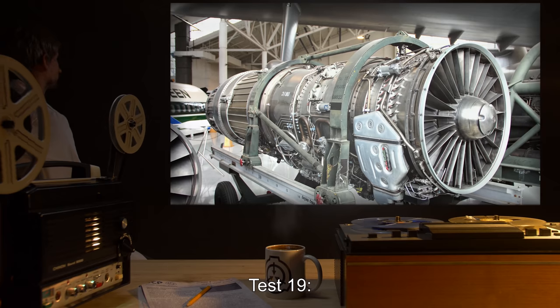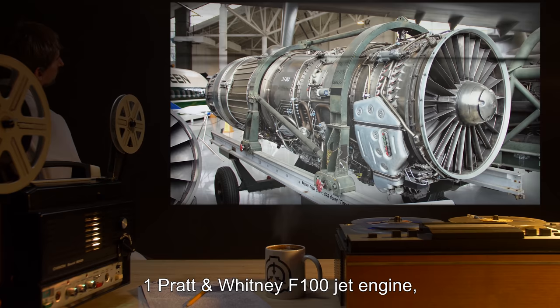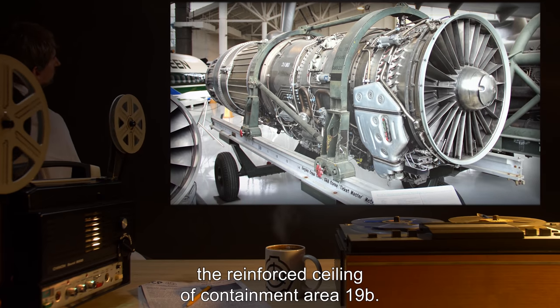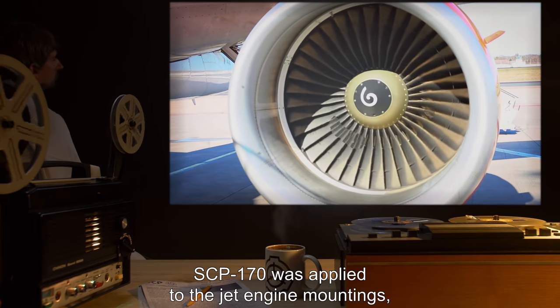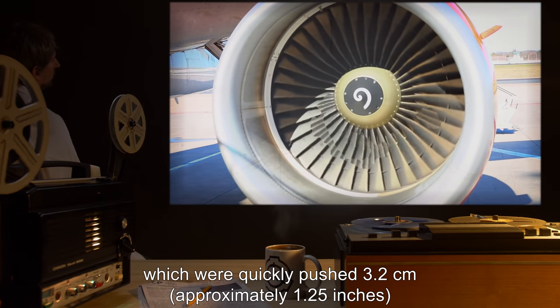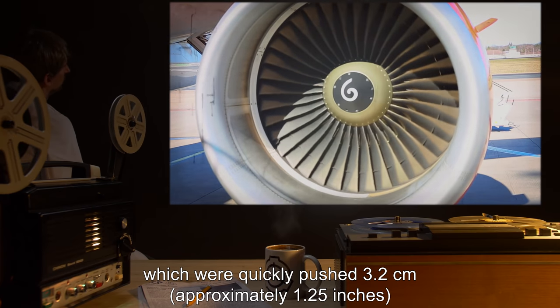Test 19. Test materials: one Pratt and Whitney F-100 jet engine, the reinforced ceiling of containment area 19B. Procedure: SCP-170 was applied to the jet engine mountings, which were quickly pushed 3.2 centimeters (approximately 1.25 inches) into the ceiling of the chamber. After connecting an appropriate fuel supply and control system, the jet engine was fired.